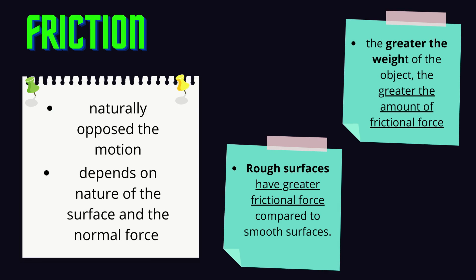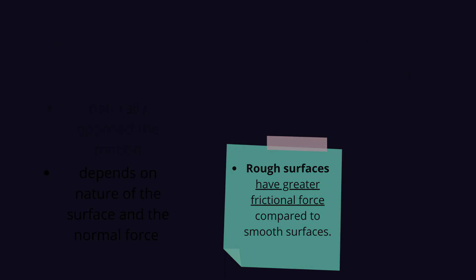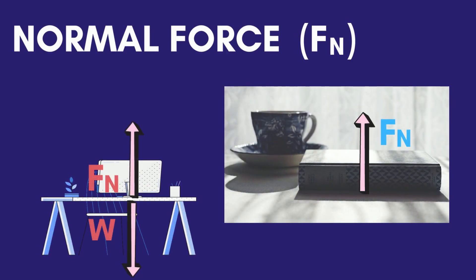Friction depends on the nature of the surfaces that are in contact with each other and the normal force, which is often related to the weight of the object in contact with the surface. The greater the weight of the object, the greater the amount of frictional force. Rough surfaces have greater frictional force compared to smooth surfaces. In physics, normal force refers to the contact force that occurs when one object is touching another, and it always makes a 90-degree angle with the surface — it is perpendicular. The stronger the normal force, the stronger the force due to friction.